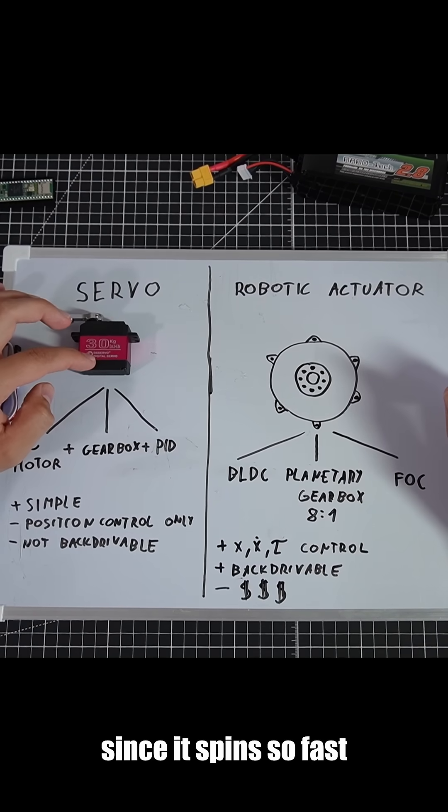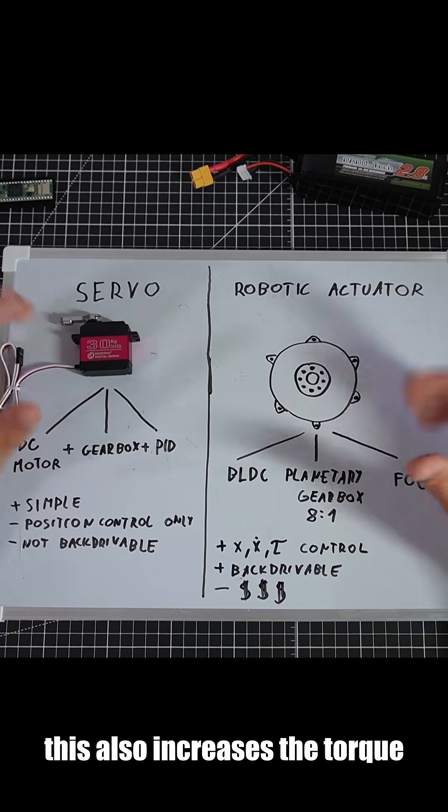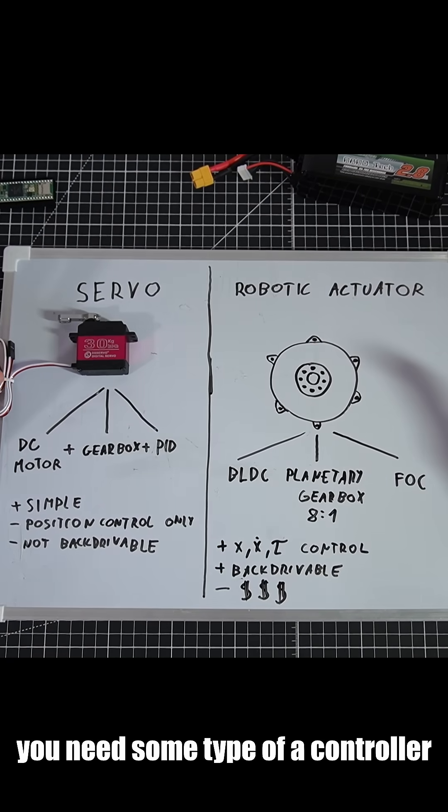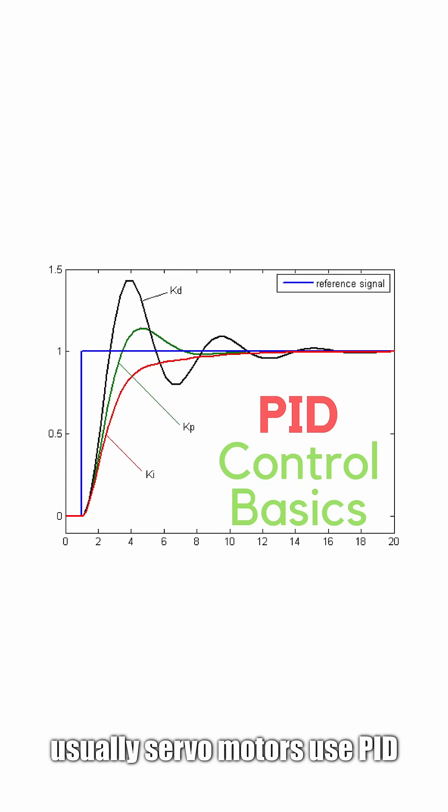Since it spins so fast, you need a gearbox to reduce the speed. This also increases the torque. To control the position of the servo arm, you need some type of controller. Usually these servo motors use PID.